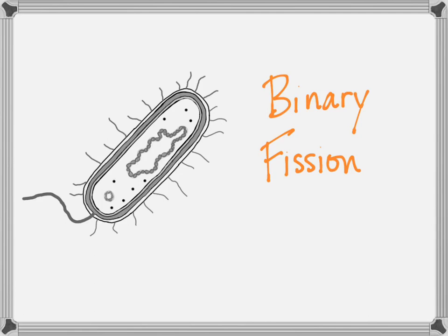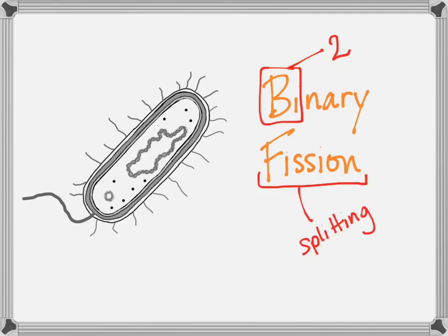You should remember that the prefix 'bi' means two, and the word 'fission' means splitting. So we're literally talking about a process where one bacterial cell splits into two, hence why it's asexual — no mama and daddy, just mama.